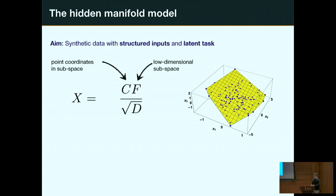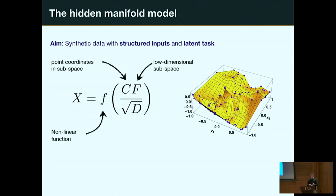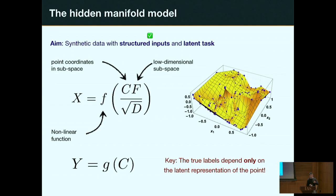The hidden manifold model works as follows. In a high-dimensional space, choose a random lower-dimensional manifold — say a two-dimensional plane — and generate random points on it. Normalizing by the dimension gives coordinates c. If you just took these as linear combinations of random directions, things remain boring: you'd just project the dynamics onto the manifold and revert to the IID case. So instead, we pass these points through a nonlinear function — like sine, erf, or relu — effectively folding the lower-dimensional manifold back into full R^P.